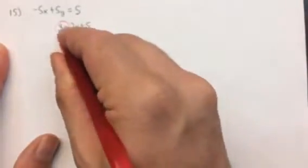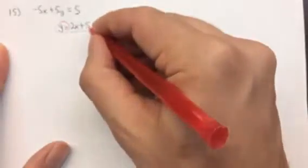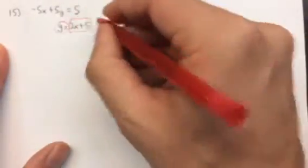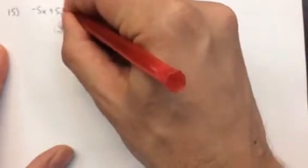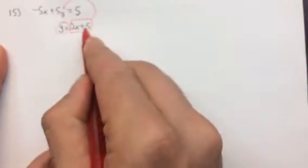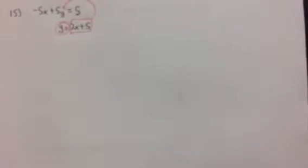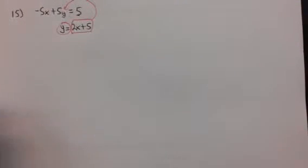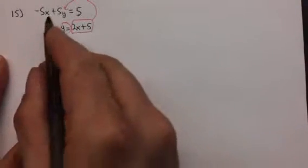The way this works is we take what y is equal to, 2x plus 5, and we substitute it into the other equation. Where y is, we put what y is equal to, 2x plus 5. And the reason this is helpful is because it makes it so that there's only one variable. Instead of having both x and y, after we substitute, it'll just be x's. Let's look at how this looks.